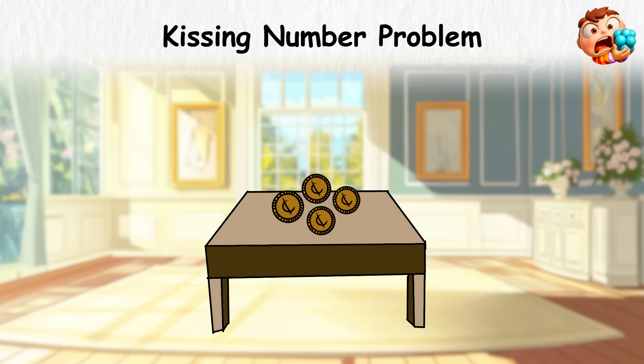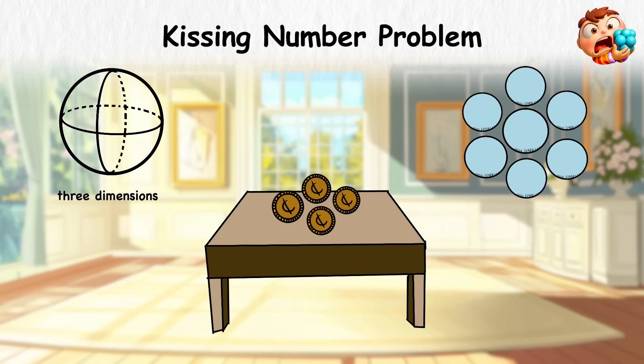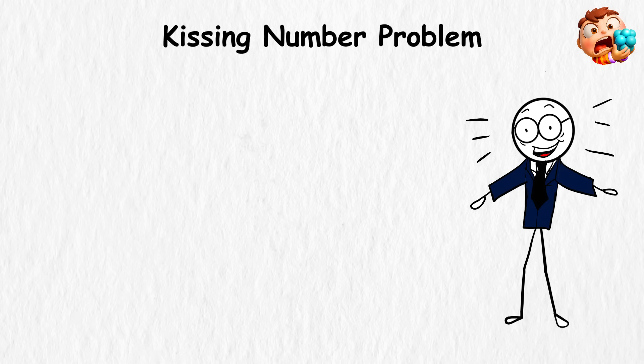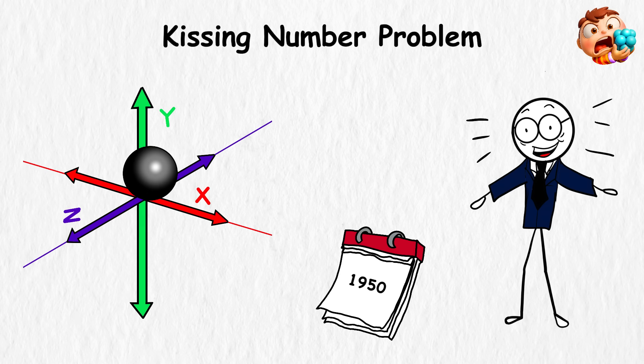In two dimensions, like coins on a table, a circle can be surrounded by six others. By the time you hit three dimensions, things get messy. Mathematicians argued for centuries whether the number was 12 or 13, until it was finally proven in the 1950s. A sphere in 3D space can have exactly 12 snug neighbors.